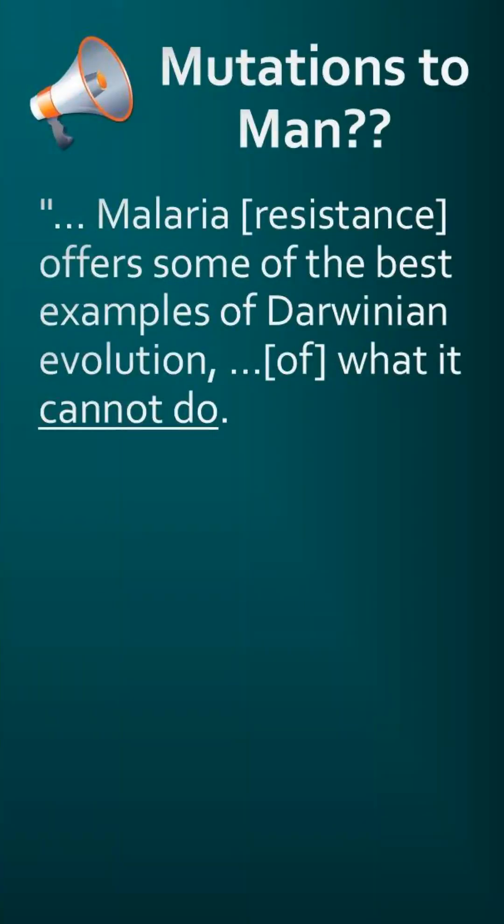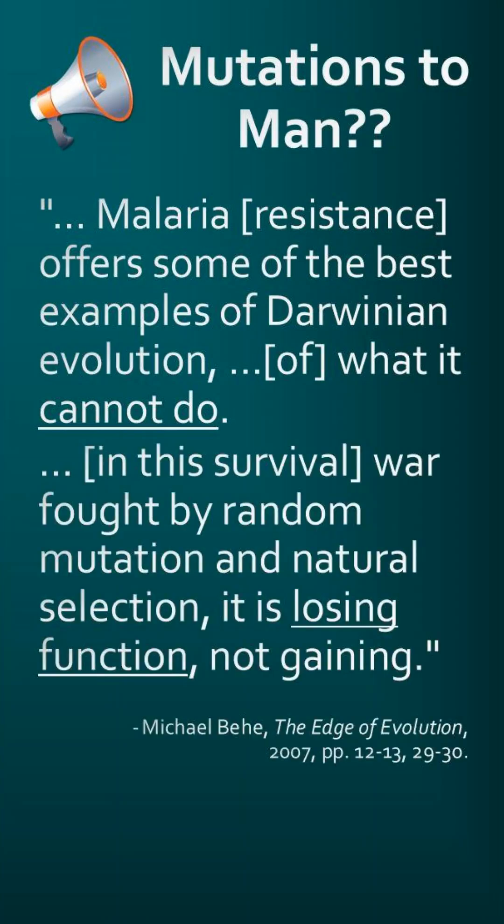Malaria resistance offers some of the best examples of Darwinian evolution, of what it cannot do. In this survival war fought by random mutations and natural selection, it is losing function, not gaining.